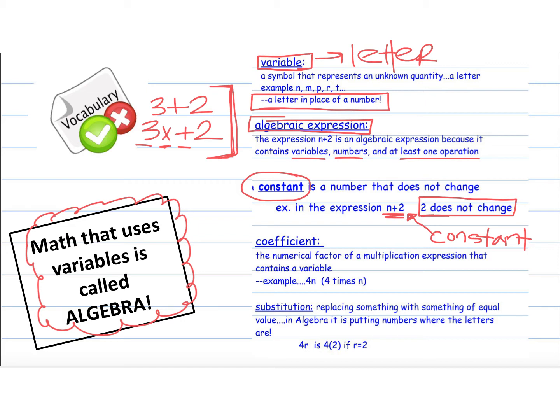Coefficient is the factor of a multiplication expression that contains a variable. So coefficient, you could just write this example, 4n, which remember I said a number with a variable means multiplication. I think I said that in the last video. So 4n would be the same as 4 times n. And the coefficient would be the 4 because it is the factor of the multiplication expression of the variable.